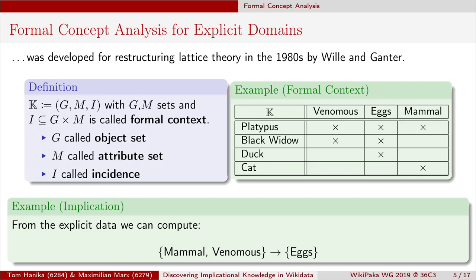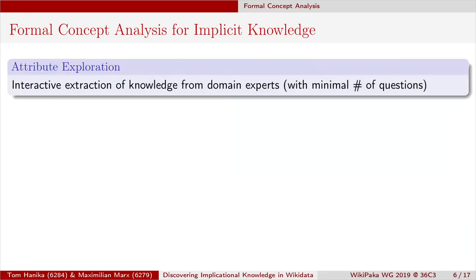Our main problem is we do not have such a data table for Wikidata — we have a graph which is far more expressive than binary data, and we cannot even store Wikidata as a binary table. Even if you tried, we'd have no chance to compute such rules from that. For this, people from Formal Concept Analysis proposed an algorithm to extract implicit knowledge from an expert — in our case, Wikidata.